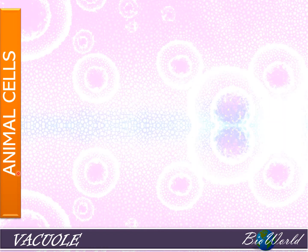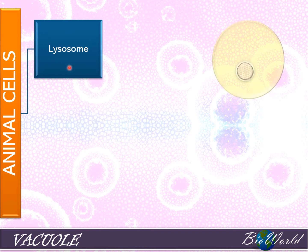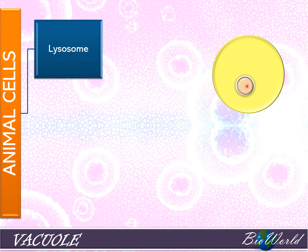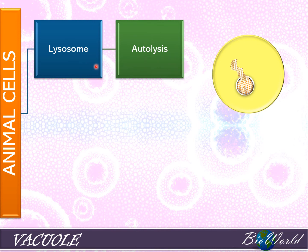Vacuoles — or better known as vesicles in animal cells — can form new organelles. For example, a vesicle can become a lysosome if it contains hydrolytic enzymes. The lysosome has many functions, one of which is autolysis. This is a process to help remove old and aged cells. When a cell has become old, the pH of the cytoplasm becomes acidic, causing the membrane of the lysosome to become permeable to the hydrolytic enzymes. Once the hydrolytic enzymes diffuse into the cytoplasm, the cell becomes destroyed.